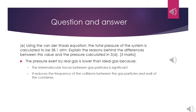For question E: using the Van der Waals equation, the total pressure of the system is calculated to be 38.1 atm. Explain the reasons behind the difference between this value and the pressure calculated in 3D. The answer is: the pressure exerted by a real gas is lower than that of an ideal gas because the intermolecular forces between gas particles are significant. This reduces the frequency of collisions between the gas particles and the wall of the container.